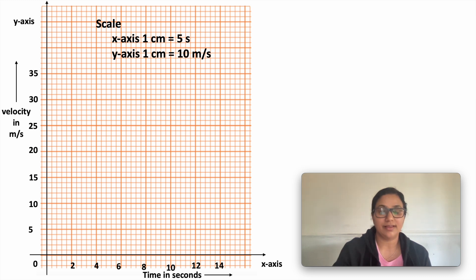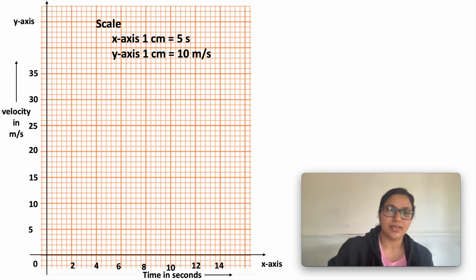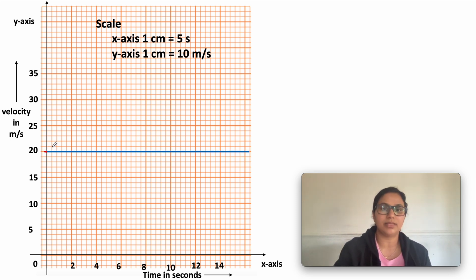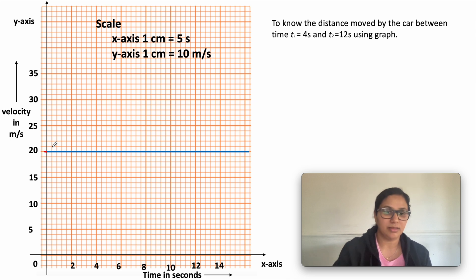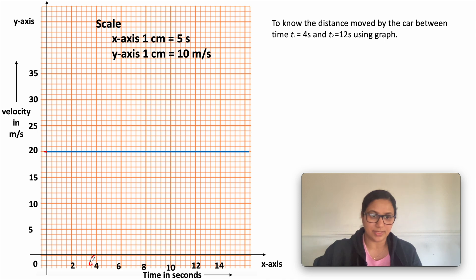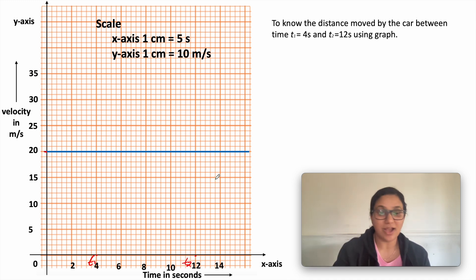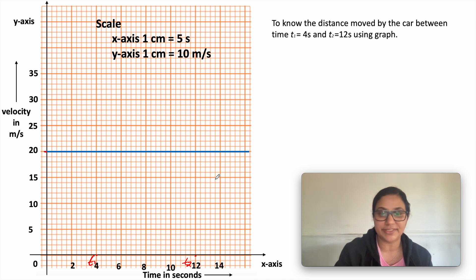We have just learned that if a car is moving with uniform velocity, the graph is a straight line parallel to the x-axis. Since the velocity is 20 meters per second, we get a straight line at 20 meters per second, parallel to the x-axis. If we want to calculate the distance moved by the car between time interval t1 = 4 seconds and t2 = 12 seconds, we proceed as follows.